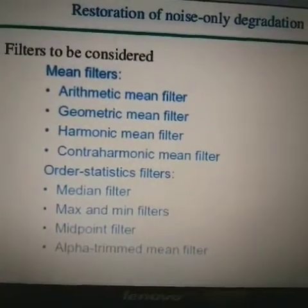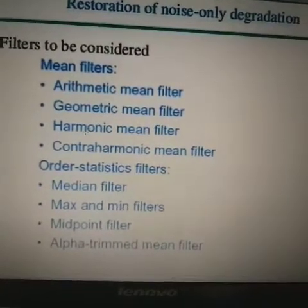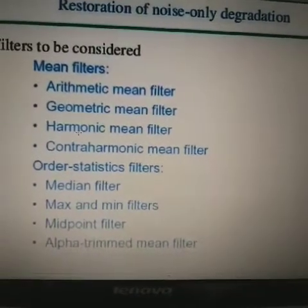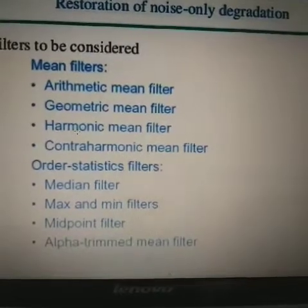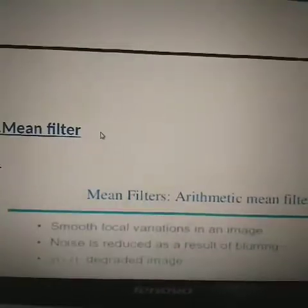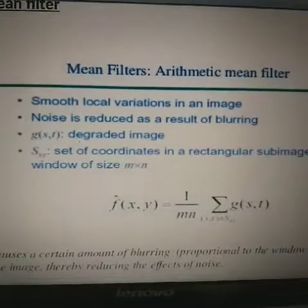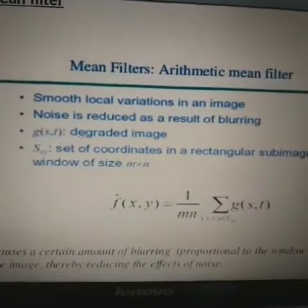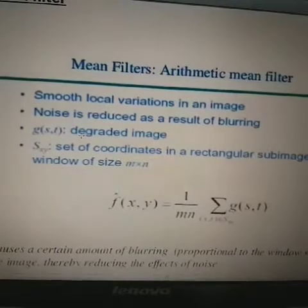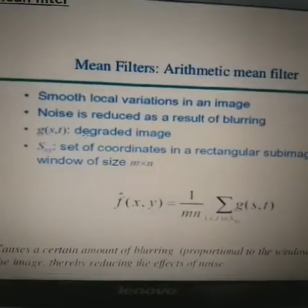In the case of mean filters, we have categorized them into: arithmetic mean filter, geometric mean filter, harmonic mean filter, and contra harmonic mean filter. In the case of order statistic filters we have the median filter, max filter, min filter, midpoint filter, and the alpha-trimmed mean filter. We will discuss these filters one by one. Mean filters are noise reduction spatial filters introduced to develop several other filters whose performance is in many cases superior to simple filters.